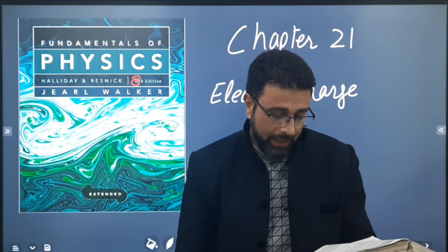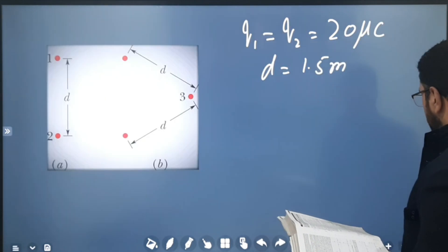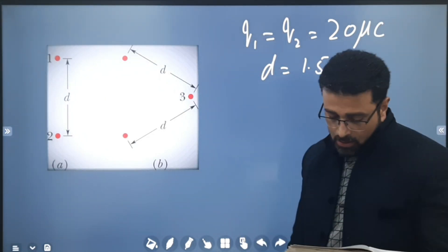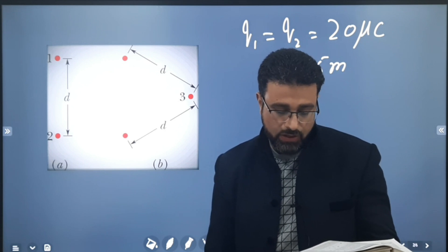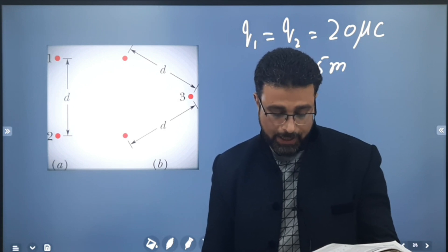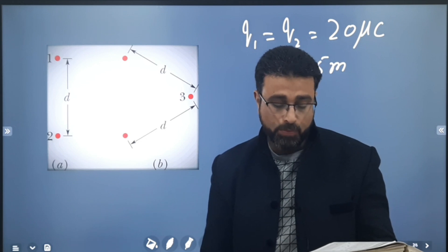In Figure A, particle 1 and 2 have charge 20 microcoulombs each and are held at separation distance d equal 1.5 meters. Part A: What is the magnitude of electrostatic force on particle 1 due to particle 2?